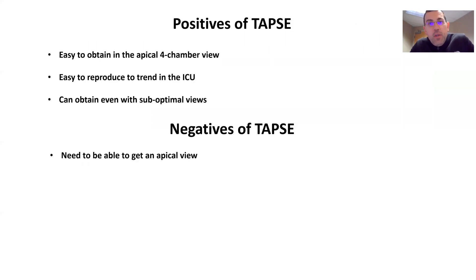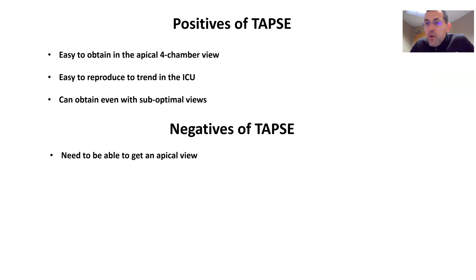There are a lot of positives for TAPSE. It's usually pretty easy to get an apical four-chamber view, and it's easy to reproduce in the ICU. For example, if we have a patient with PE and we want to examine their right ventricular function — perhaps after they receive TPA or half-dose TPA — this is easy to reproduce. Or if we're treating someone for pulmonary hypertension with right heart strain and we're lowering that pulmonary hypertension with flolan, milrinone, nitric, or a different agent, this is pretty easy to reproduce.